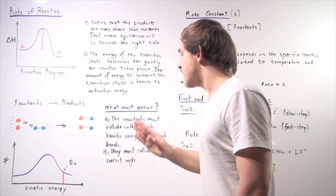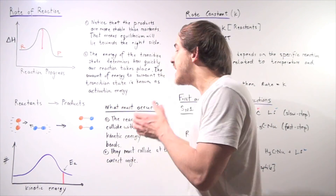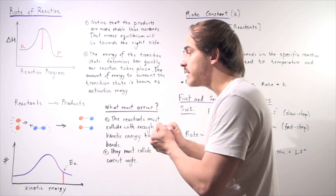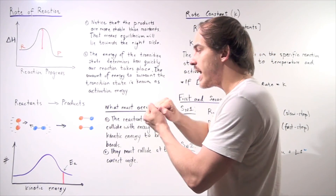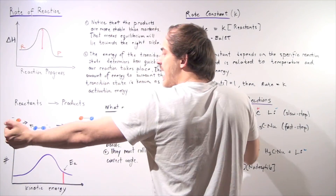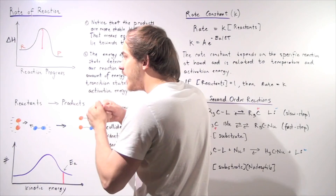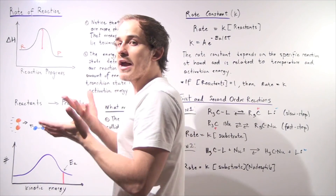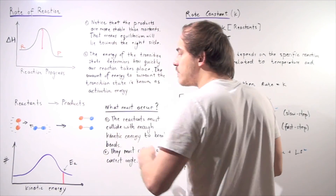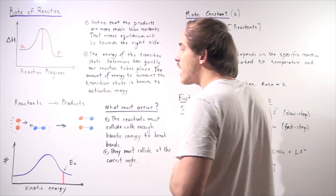The second thing that must happen is that when they make that collision, they have to collide at a certain angle, in a certain way. For example, looking at these two reactants — they have to collide at a certain angle, with a certain amount of energy. And if all that happens, we will form our products and our new bonds.